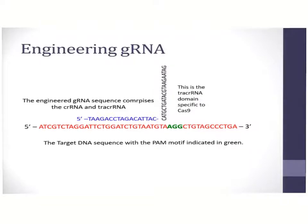The tracer RNA domain, indicated vertically in black, is the portion of the RNA which will bind to the Cas9 enzyme. This sequence is Cas9 enzyme-specific and it cannot be changed. However, the region indicated in blue can be modified so as to target the respective DNA target.